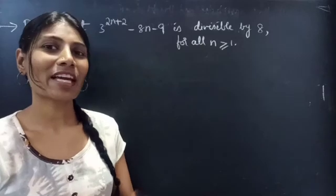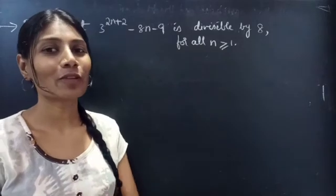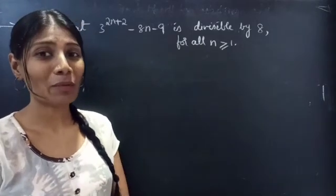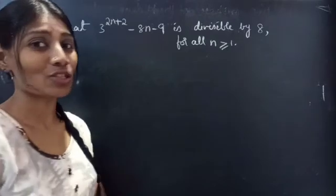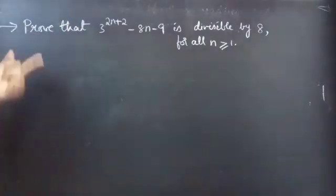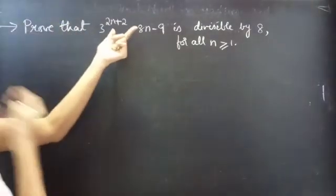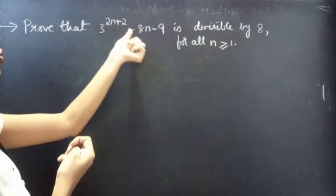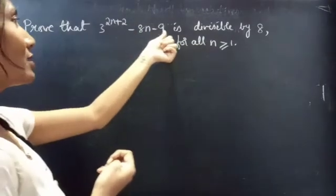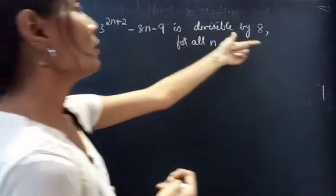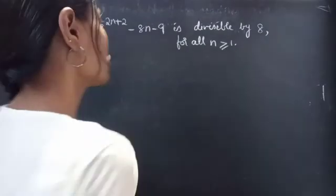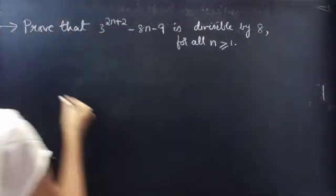Hello everyone, this is Zekalpna here. In this video we are going to see a problem from mathematical induction. So let's get started. Problem: prove that 3 power 2n plus 2 minus 8n minus 9 is divisible by 8 for all n greater than or equal to 1.